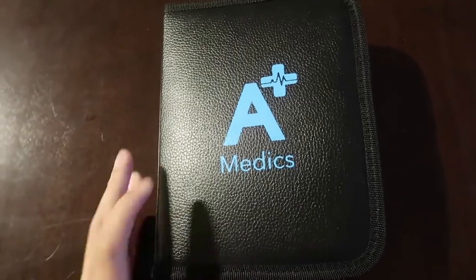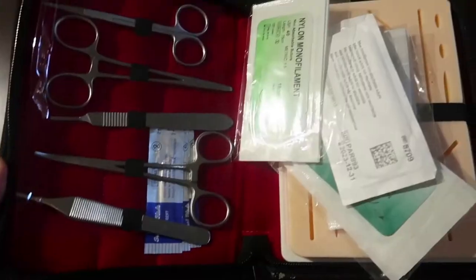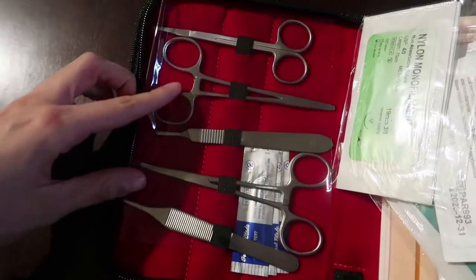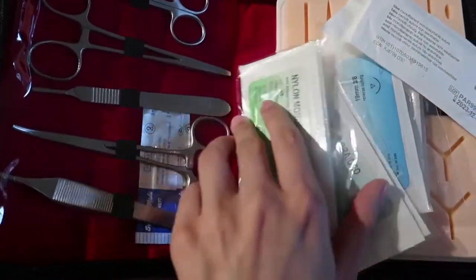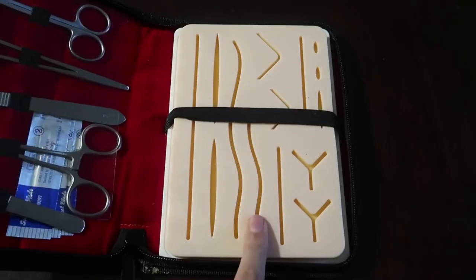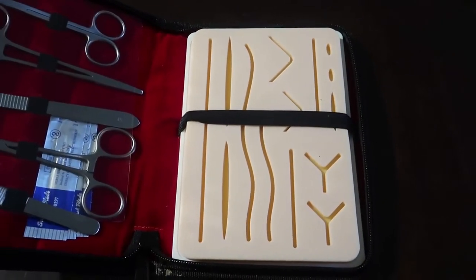So it looks like this. It comes with a really nice container to hold everything, and inside you get all the tools on the left. You get extra scalpels, a whole bunch of different suture types, and the silicone pad that you can practice your suturing with.